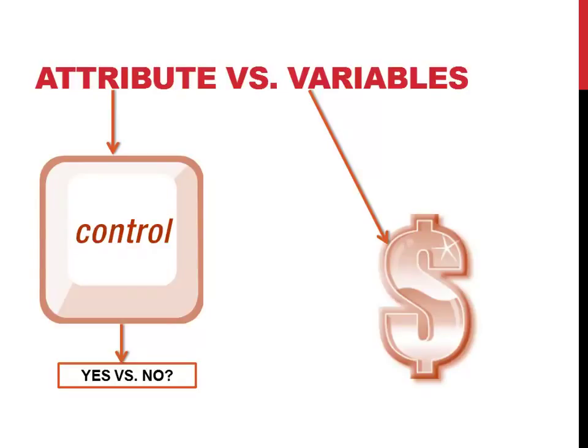Do I have, when I'm looking at that cash disbursements, do I see or find evidence that the voucher package was canceled upon payment? Yes or no. So we're testing attributes, right? So that is why we use attribute sampling when we're testing internal controls.